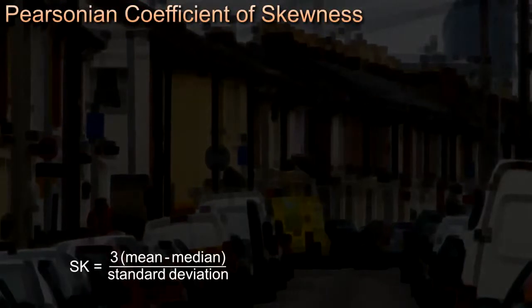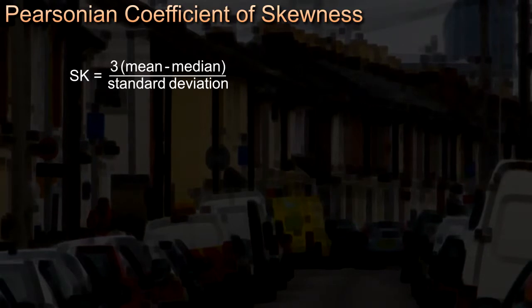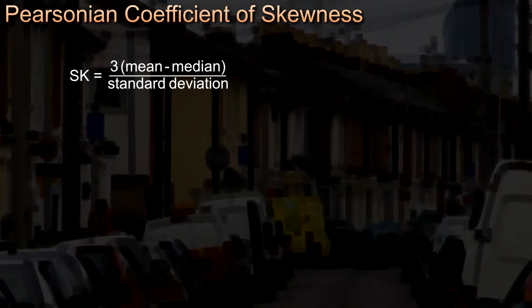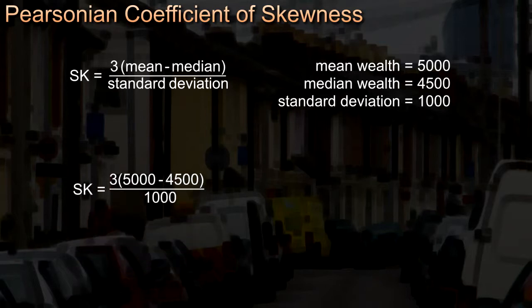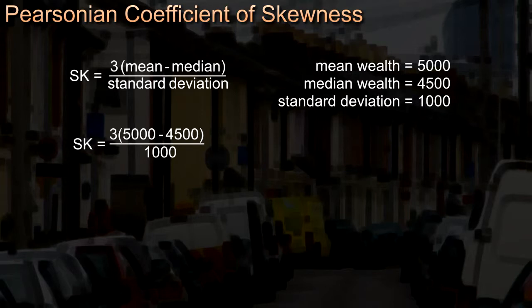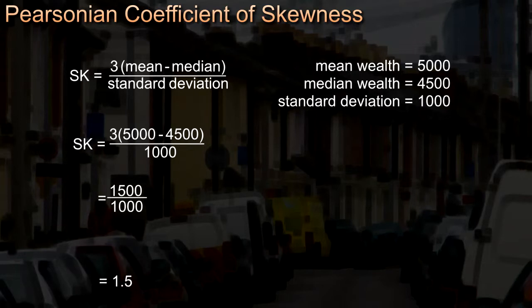With that understanding, we can develop a measure of how skewed wealth distribution is. The Pearsonian coefficient of skewness, SK, is given as 3 times (mean minus median) over the standard deviation. A symmetrical distribution gives SK of 0, and in general SK falls between plus 3 and minus 3. So with a mean wealth of 5,000, a median of 4,500, and a standard deviation of 1,000, SK equals 3 times (5,000 minus 4,500) over 1,000, which gives us 1.5.